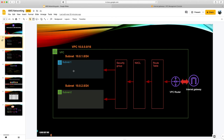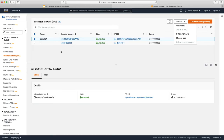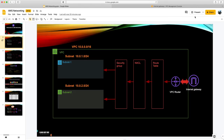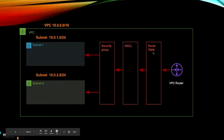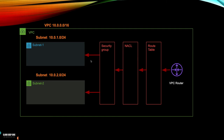We've attached the internet gateway to our VPC, but can EC2 instances in these subnets talk to the internet? No — and this is where another concept comes in: the route table. A route table is basically a set of rules that tells your traffic, or your packets, where to go. It has a destination and a target, defining rules like: if traffic is destined for this particular IP range, send it to this particular location.